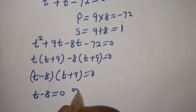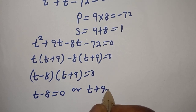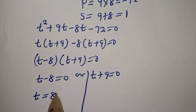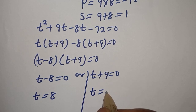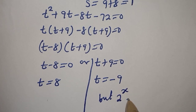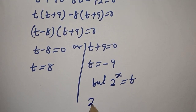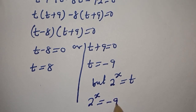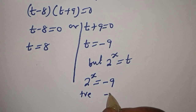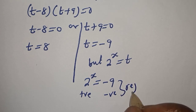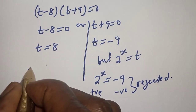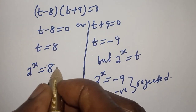There are two cases: t minus 8 is equal to zero, or t plus 9 is equal to zero. From the first case, t is equal to 8. From the second, t is equal to minus 9. Here, 2 raised to power s is equal to 8, or 2 raised to power s is equal to minus 9. Since 2 raised to power s is always positive, the negative value is rejected.